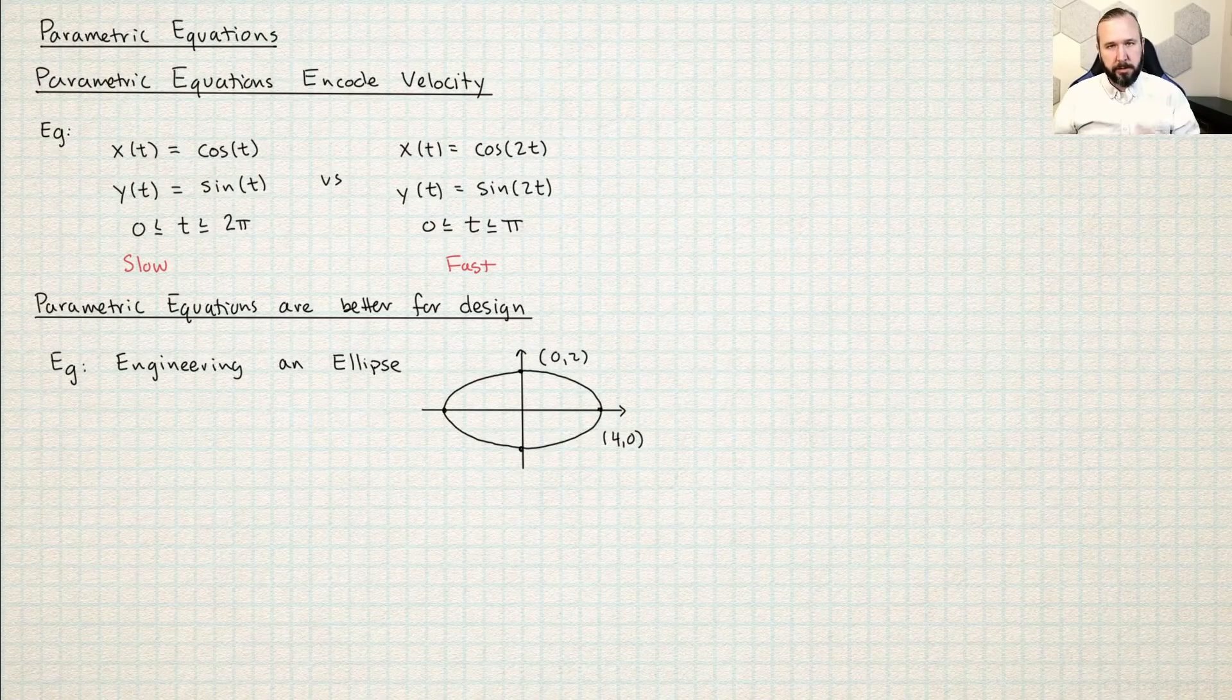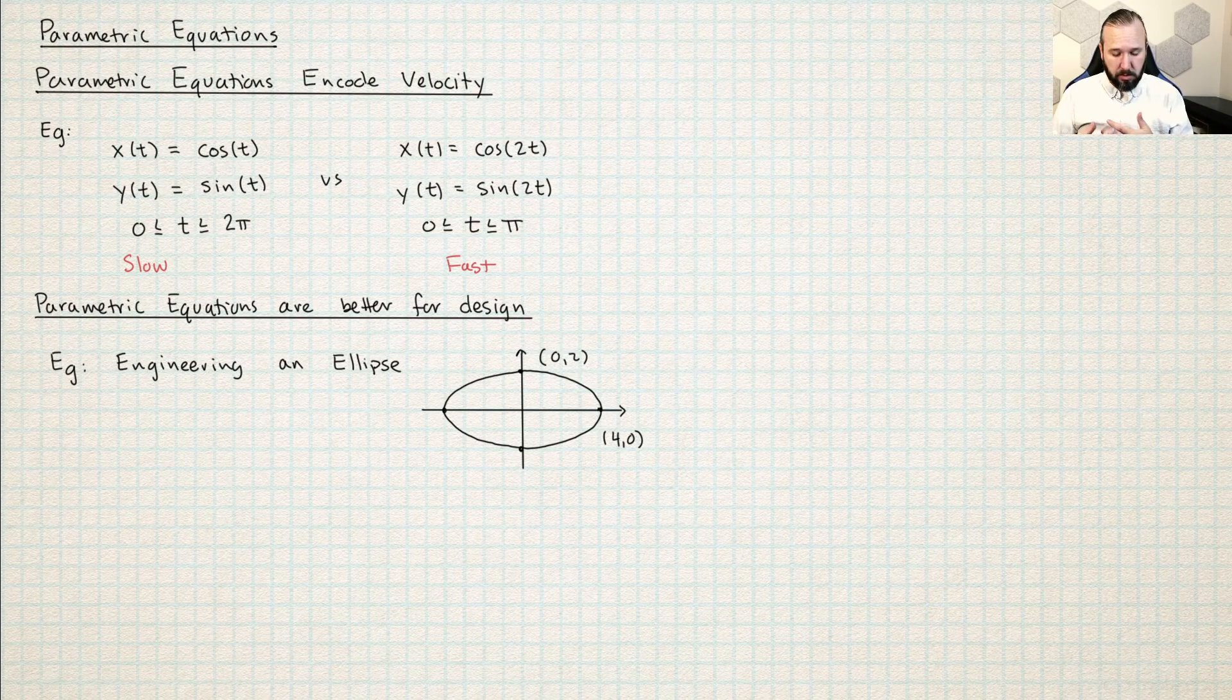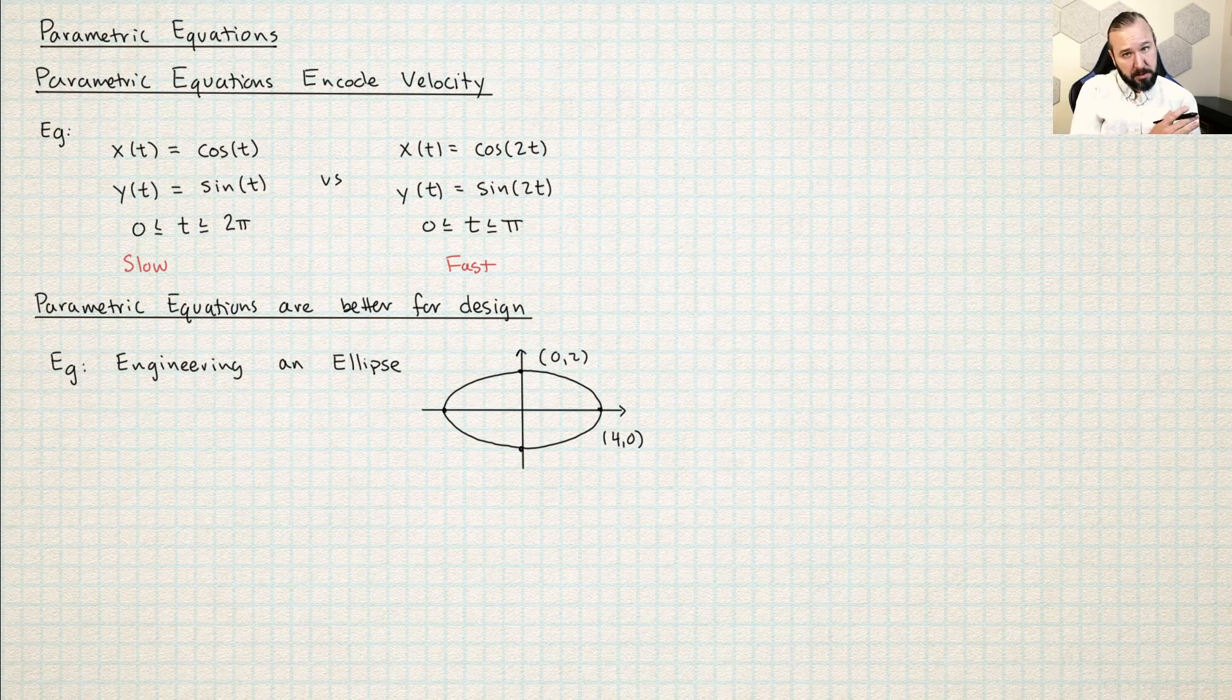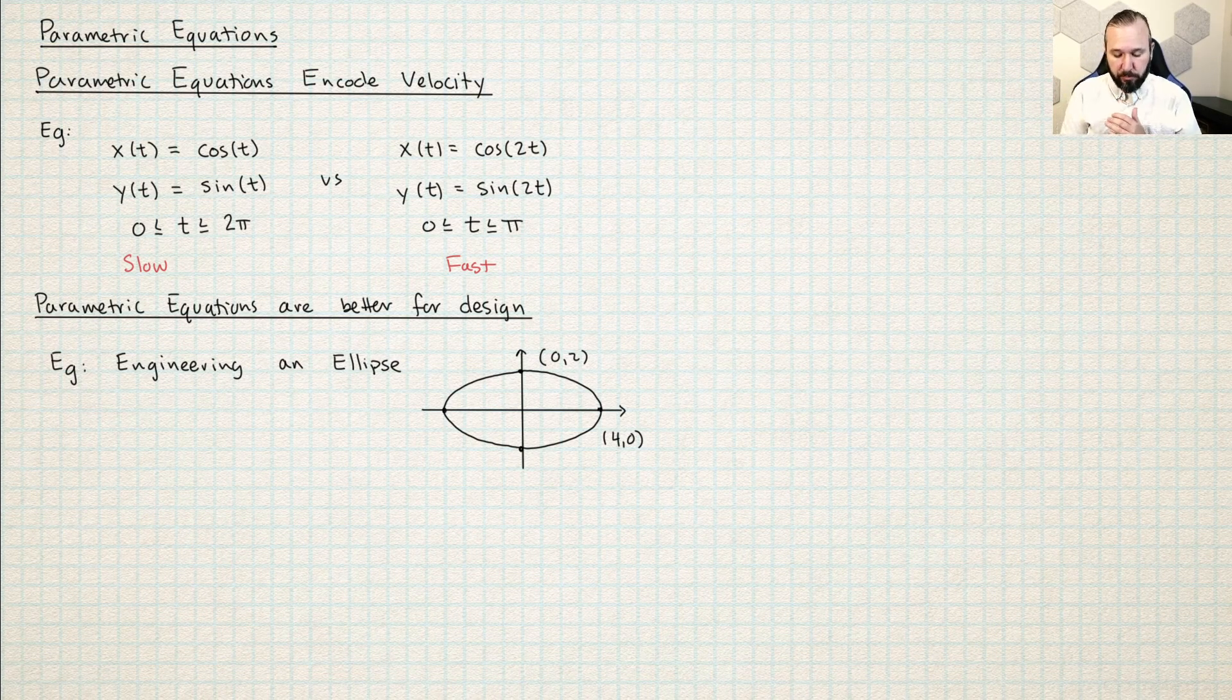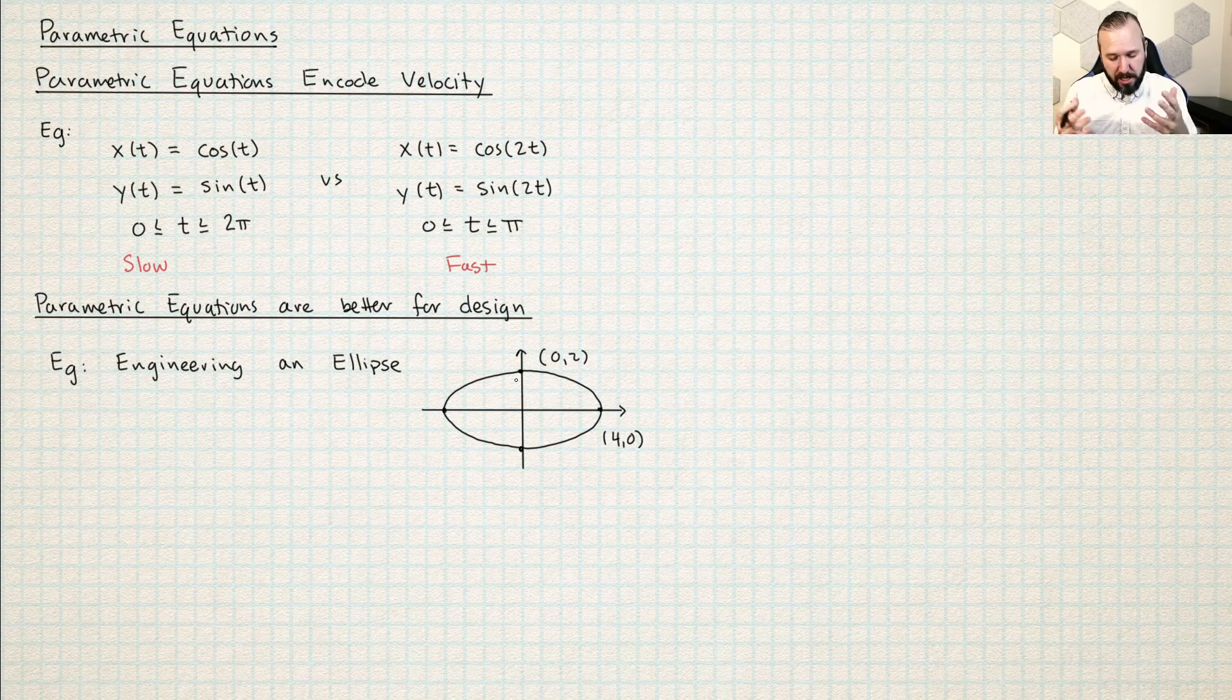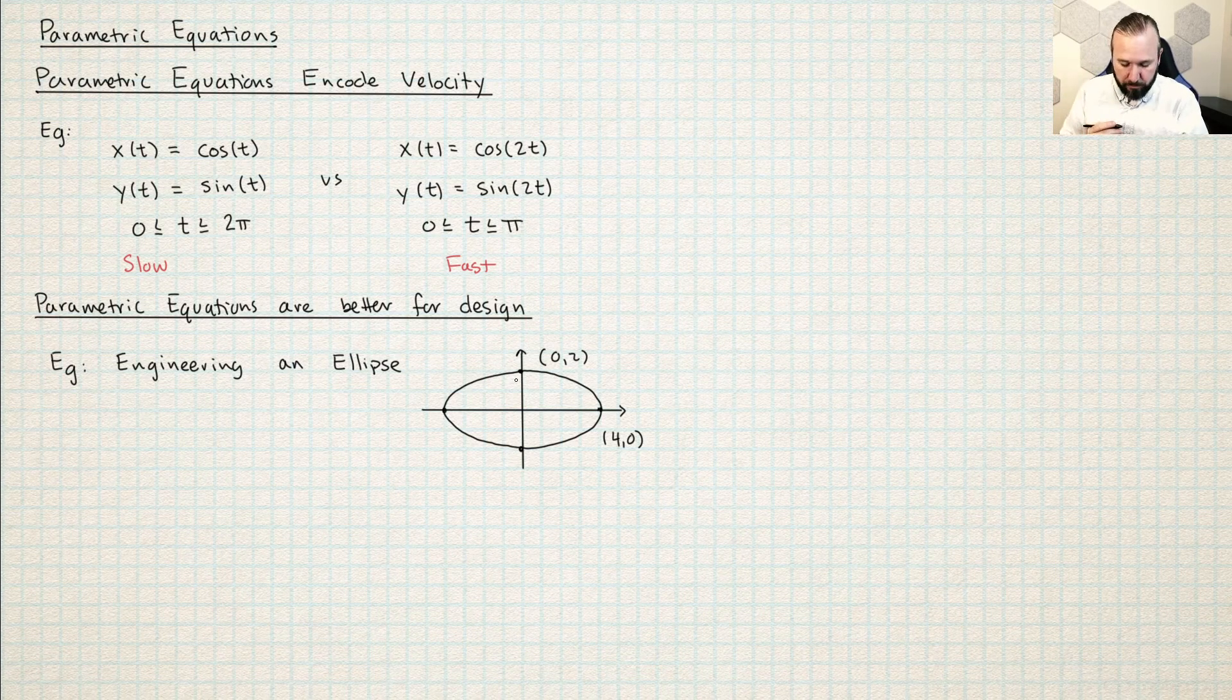Suppose you're in some kind of engineering situation where you're trying to design something and you're the creator of this object, and you have a choice between using perhaps implicitly defined functions or parametric equations. So let's look at the way those two solutions play out. So here I have a graph of an ellipse. It's kind of a circle and it's been stretched out. It goes up and down 2 and it goes left and right out to 4.